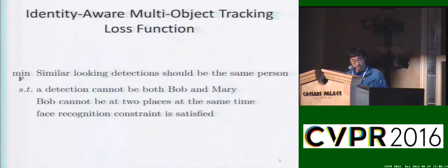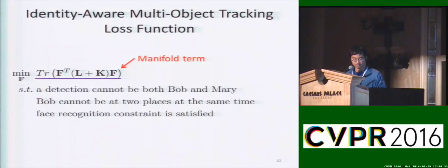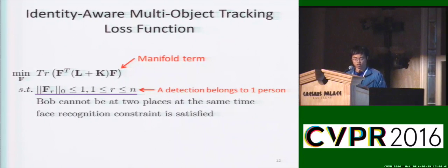And here is our loss function. The first term is to find an assignment matrix F such that similar-looking detections belong to the same person. This can be modeled with a manifold term. Next is the constraint, a person detection cannot be both Bob and Mary, which can be modeled with an L0 norm constraint.